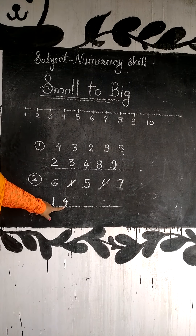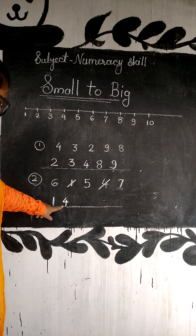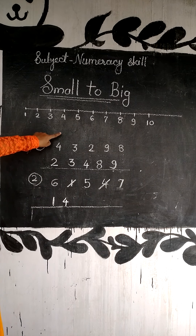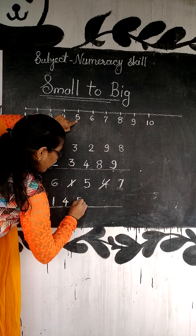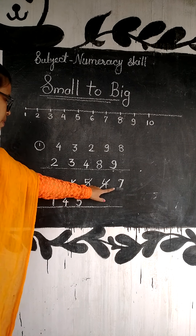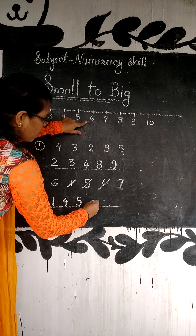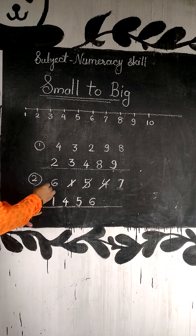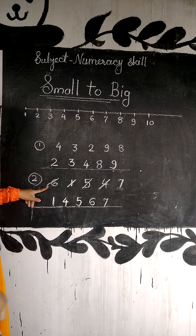And then the next small number after 4 is? From 6, 5, or 7 — after 4 comes 5. So we cross out 5. And next from 6 or 7 — 6 is smaller after 5. We cross out 6. And the last, biggest number is 7.